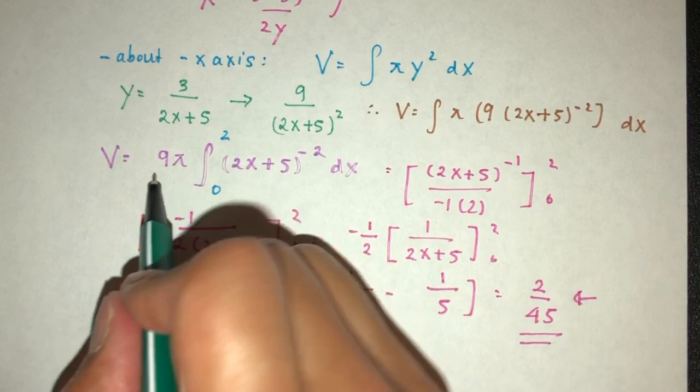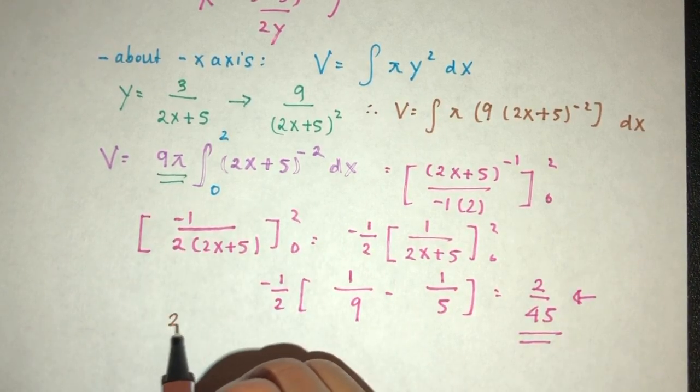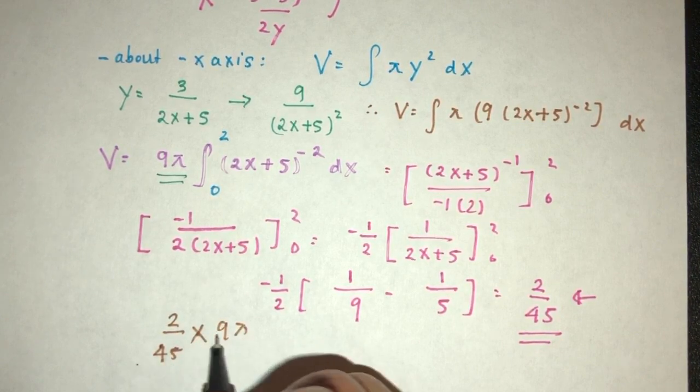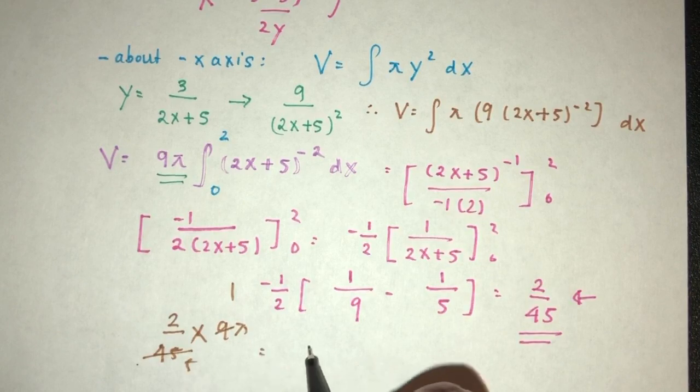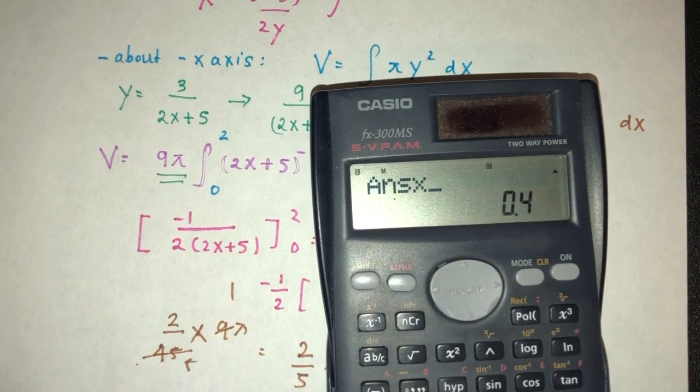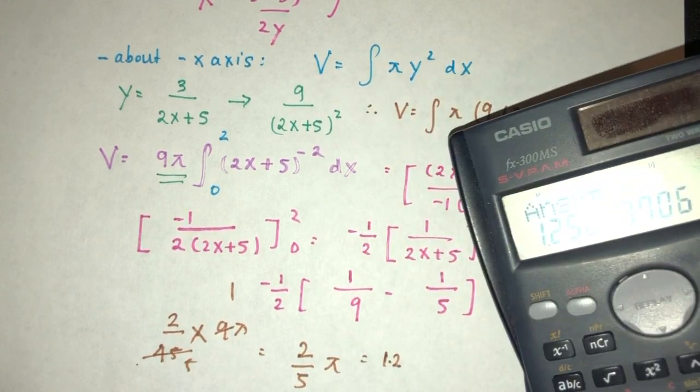We are forgetting something. Yes, we're forgetting this. See? I was about to make a mistake. So take this. Multiply by 9 pi. This will be 9, 1. That should be 5. So that will be 2 over 5 pi. 2 divided by 5 times pi. 1.26.